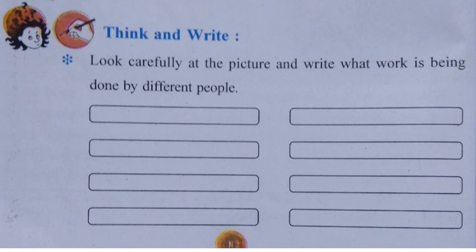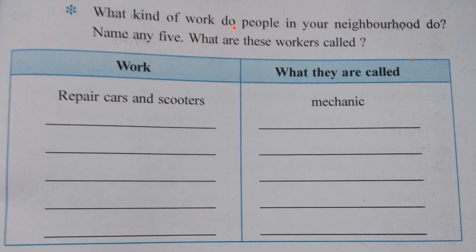Now next is 'Think and Write.' Look carefully at the picture and write what work is being done by different people. This answer was already discussed by observing the first image. Next is: what kind of work do people in your neighborhood do? Name any five. Work and what the workers are called — for example, repair cars and scooters: the workers are called mechanics.